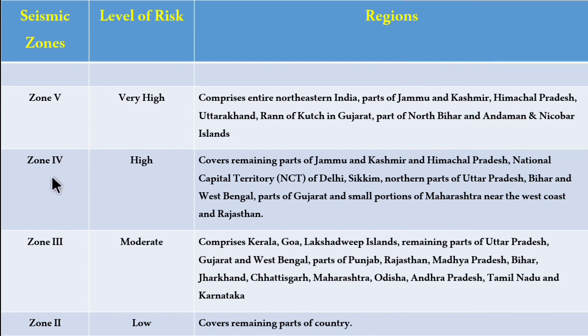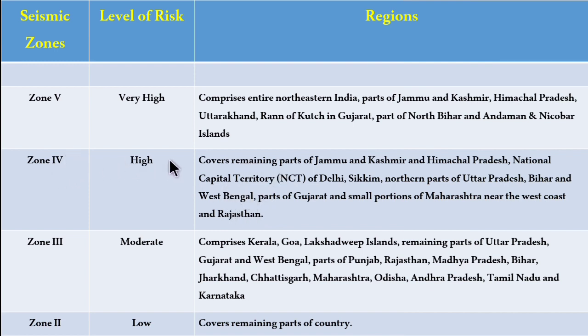Zone 4 has a high level of risk, less than Zone 5. It covers remaining parts of Jammu and Kashmir and Himachal Pradesh, NCT of Delhi, Sikkim, northern parts of Uttar Pradesh, Bihar and West Bengal, parts of Gujarat, small portions of Maharashtra near the west coast, and Rajasthan.